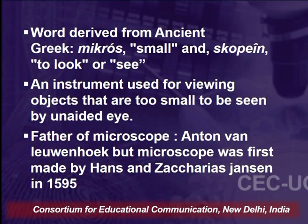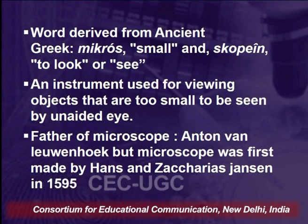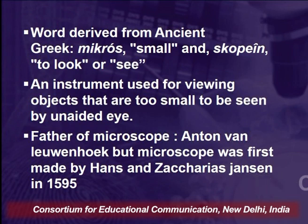A microscope is a complex instrument made up of a combination of different lenses. Whenever we put any evidence or substance under the microscope with some source of light, we can see the fine details of that particular evidence. The word microscope is derived from the ancient Greek: micros meaning small, and scopos meaning to look or to see. That means microscope refers to any instrument used to look at small substances.